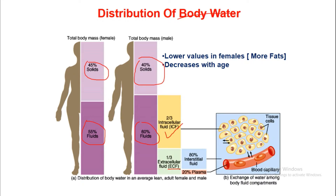Within the ECF, 80% is interstitial fluid and 20% is plasma. Plasma runs inside the blood capillaries, while interstitial fluid is present between the cells. Both are considered extracellular fluid, whereas intracellular fluid is the fluid present inside the cell.